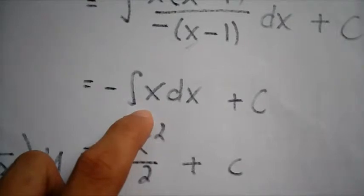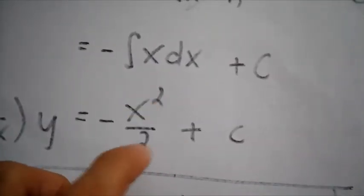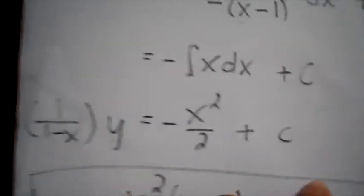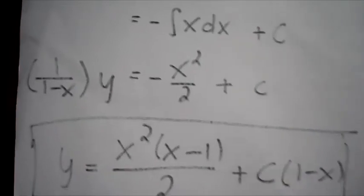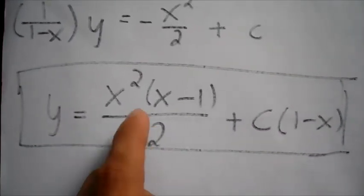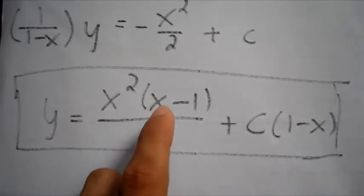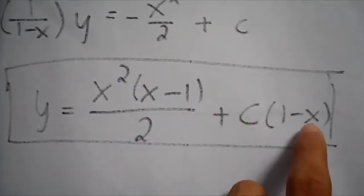Now this is just equal to the negative x squared over 2 plus c. Now this is just the form. And then the final solution now is y which is equal to x squared multiplied by x minus 1 divided by 2 plus c multiplied by 1 minus x.